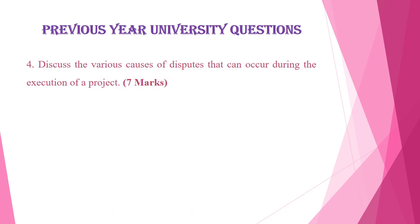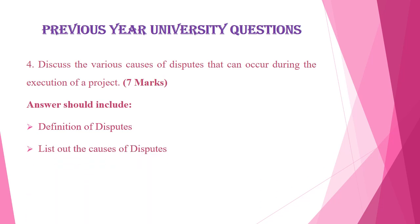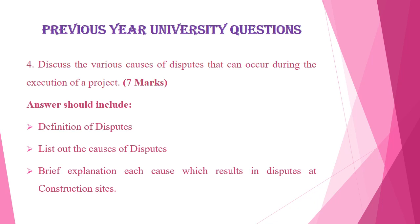The fourth question is: discuss the various causes of dispute that can occur during the execution of a project, which is also asked for seven marks. Your answer should include the definition of disputes, a list of the various causes for disputes, and a brief explanation of each cause that results in disputes at construction sites. During the execution of a project there are more chances for disputes between the contractor and the client, so mention what is a dispute, list the causes, and briefly explain each one.